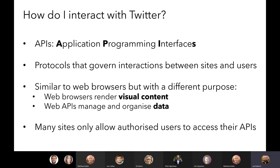At its most basic form, an API is just a protocol that governs interactions between websites and users — a way of communicating information in both directions. You can download data from a website to a user, or upload data from a user to a website. It's a two-way street for transferring data between those two different places.